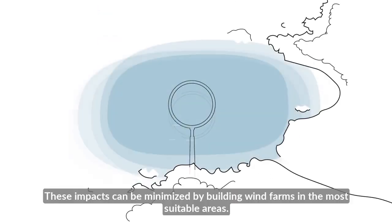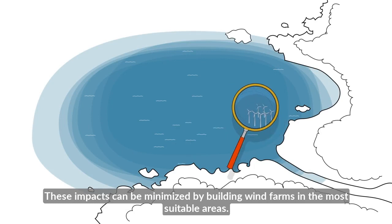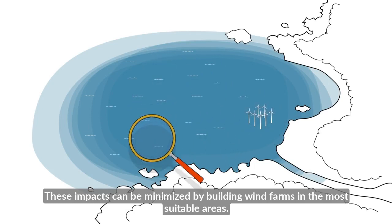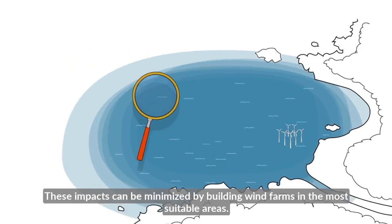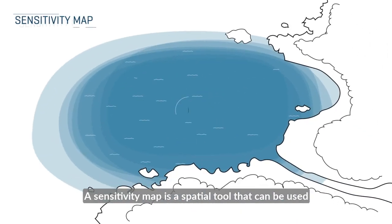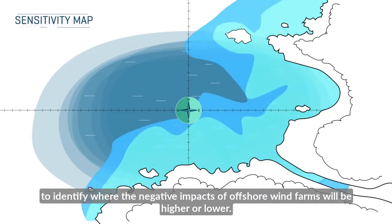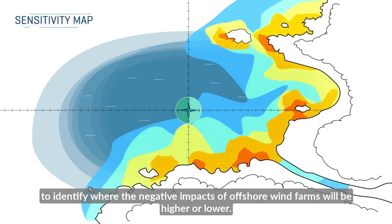These impacts can be minimised by building wind farms in the most suitable areas, but how are these identified? A sensitivity map is a spatial tool that can be used to identify where the negative impacts of offshore wind farms will be higher or lower.